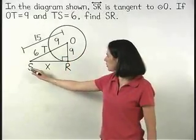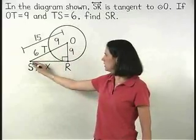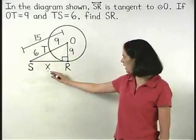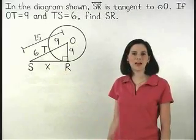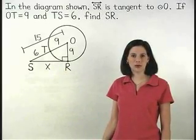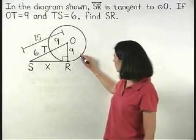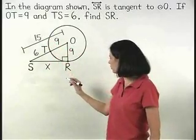This means that triangle SR is a right triangle. So to find the value of X, we can use the Pythagorean theorem to set up the equation X squared plus 9 squared equals 15 squared.